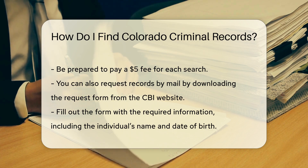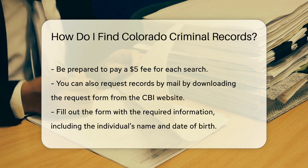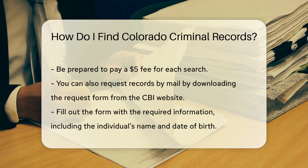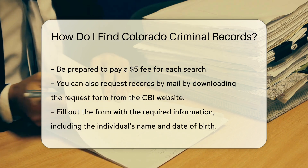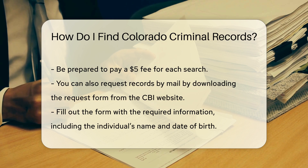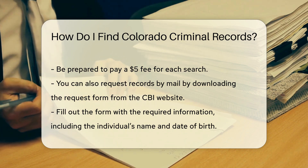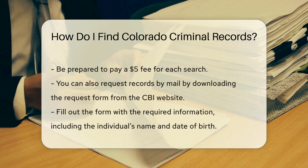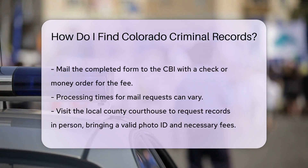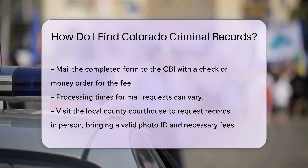If you prefer, you can also request records by mail. To do this, download the request form from the CBI website. Fill out the form with the required information, including the individual's name, date of birth, and any other identifying information. Mail the completed form to the CBI along with a check or money order for the fee. The mailing address is provided on the form.